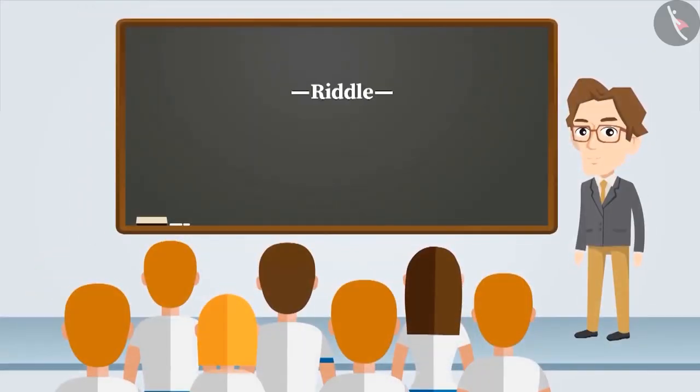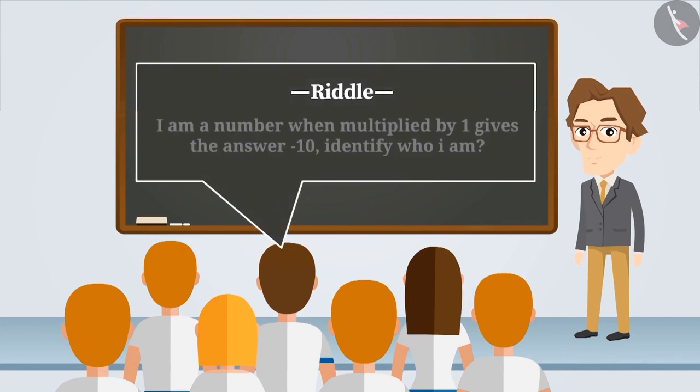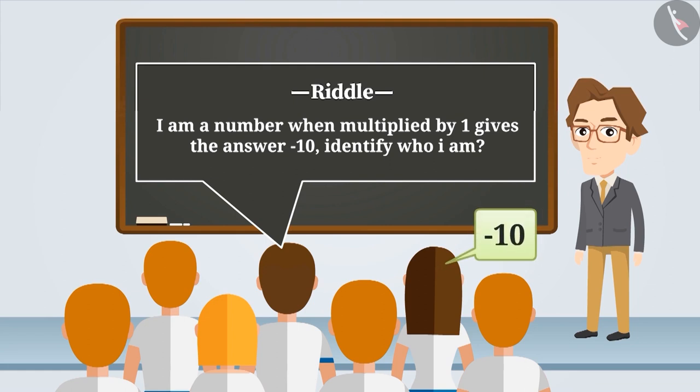One day, a game of riddles was played in a classroom. Rajesh came forward and asked the riddle: I am a number when multiplied by 1 gives the answer minus 10. Identify who I am. Mithali gave minus 10 as the answer. Is Mithali's answer correct?